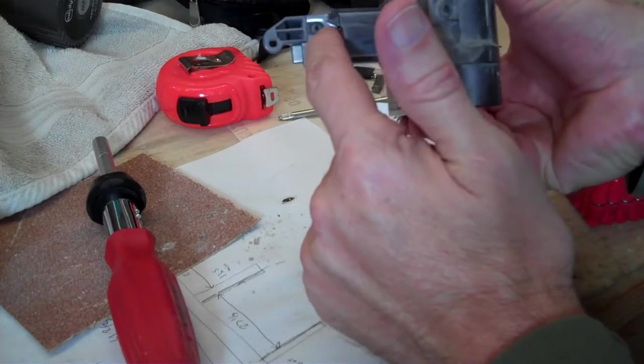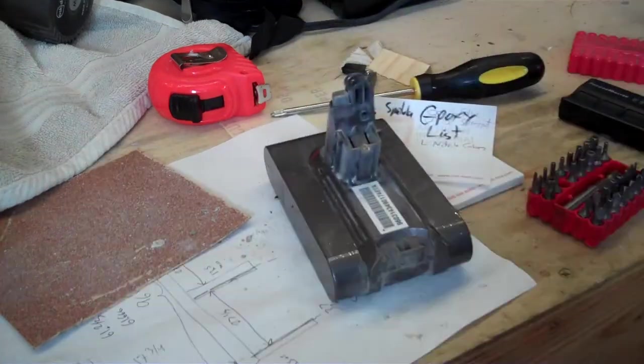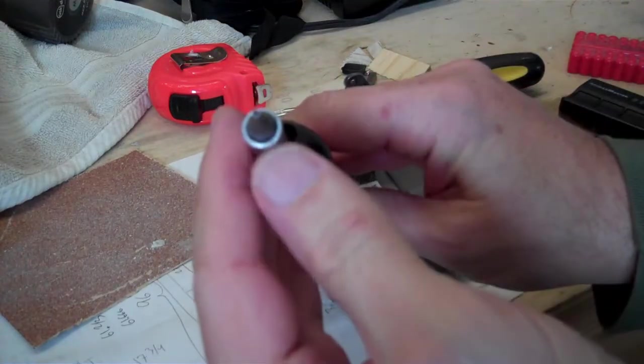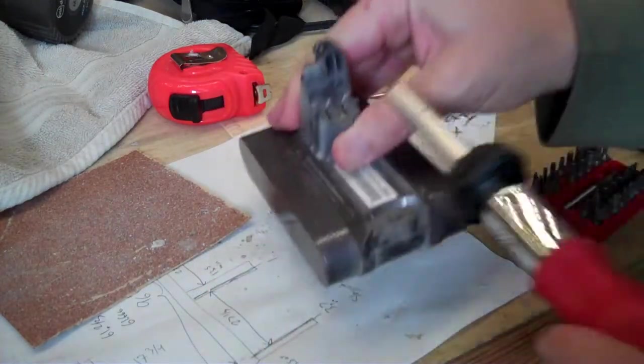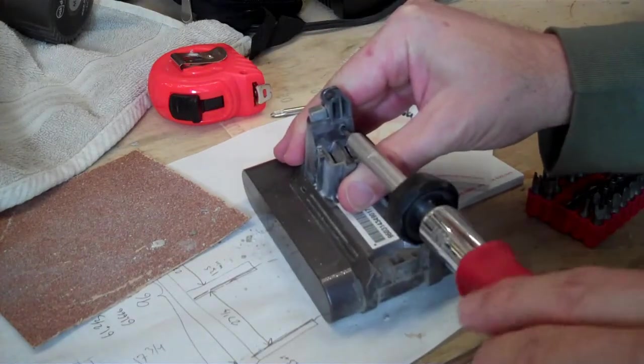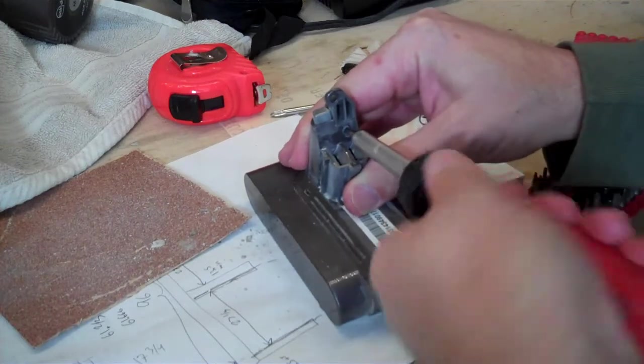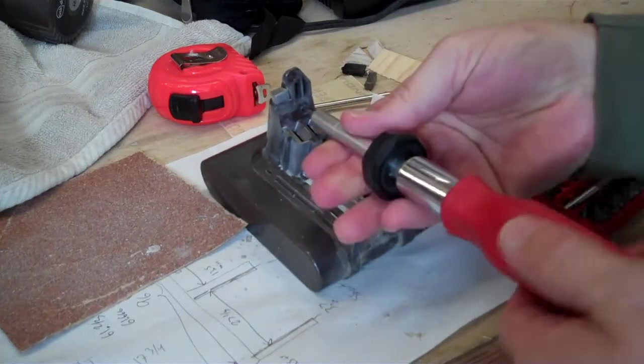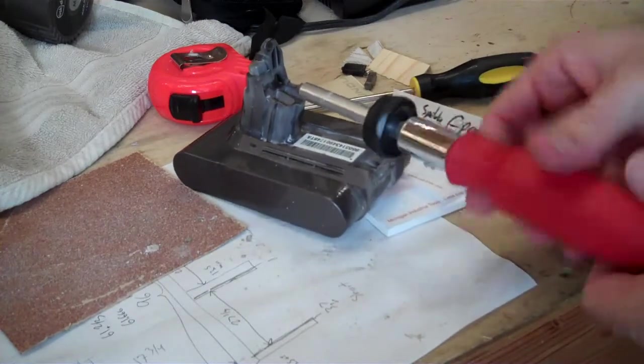There's a kind of security star screw here I'm going to take out first. So you will need a security star bit. You don't need the one with a hole in it, there's not an actual peg in the middle of this thing. So any security bit would work, any star bit would work here. But you do need a security bit for that particular screw.